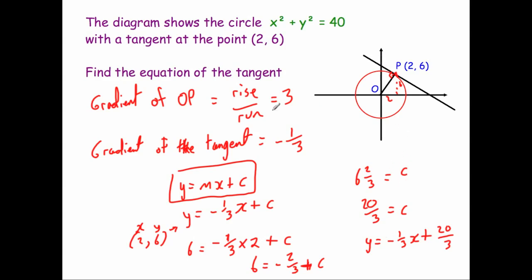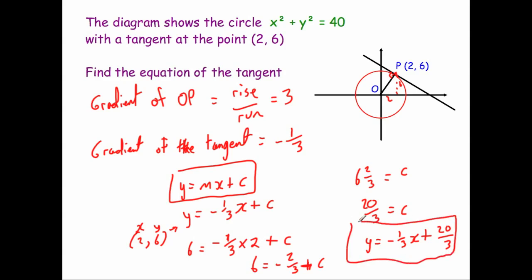Just to recap the steps: step one, find the gradient of the radius using rise over run — that gave us 3. Step two, take the negative reciprocal to get minus one third. Step three, substitute minus one third and the point (2, 6) into y = mx + c to find c. Then put c back in to get the final equation y = −⅓x + 20/3.